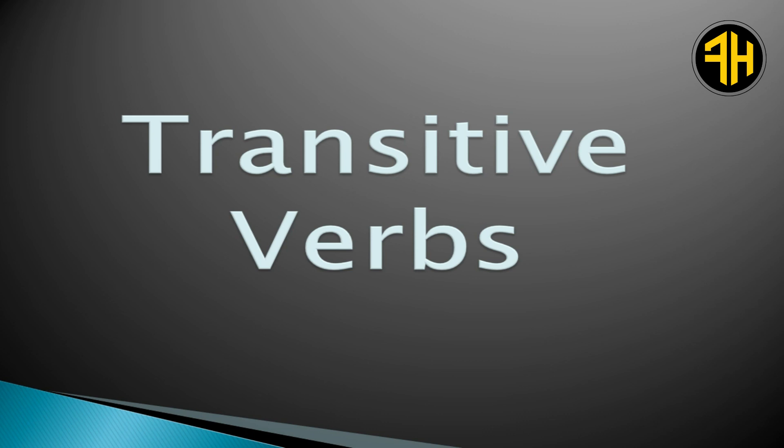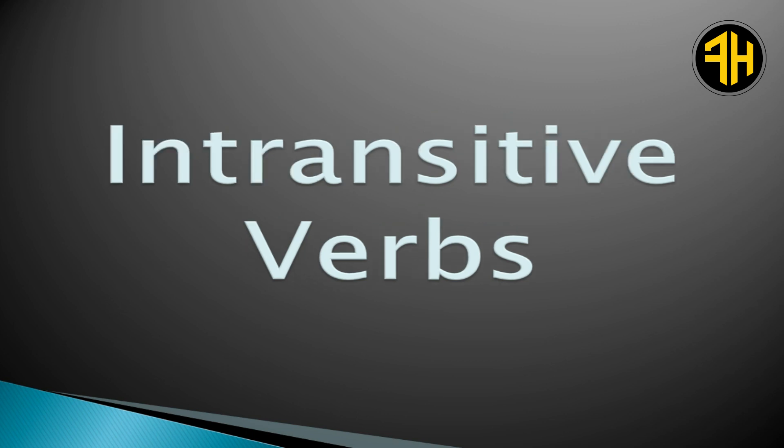Transitive verbs: A transitive verb does have a direct object. Intransitive verbs are action verbs that do not have a direct object. Linking verbs are always intransitive. Intransitive verbs never answer the questions 'who' or 'what.'